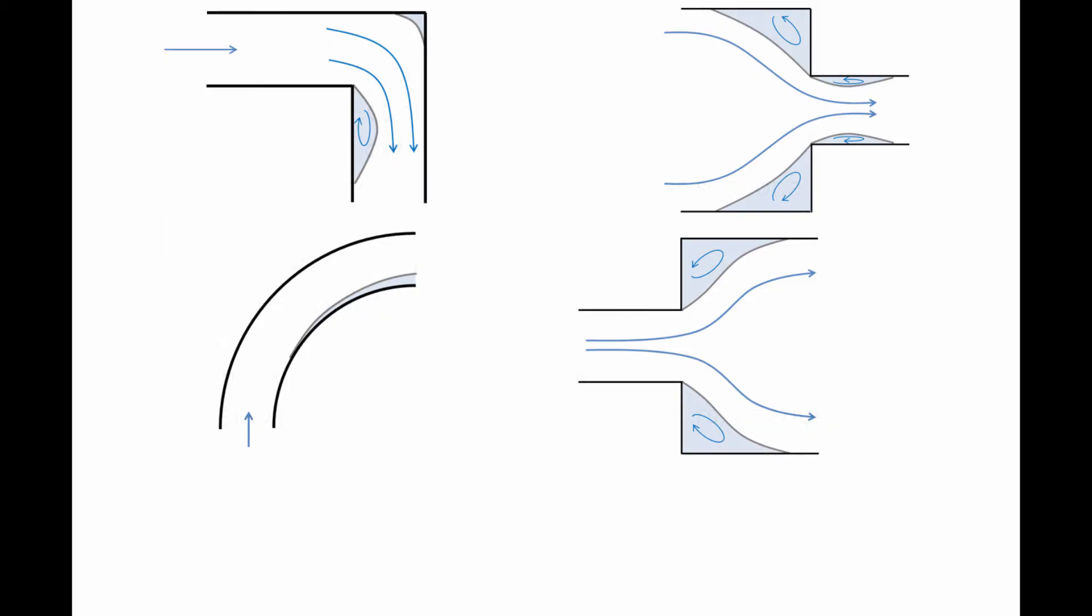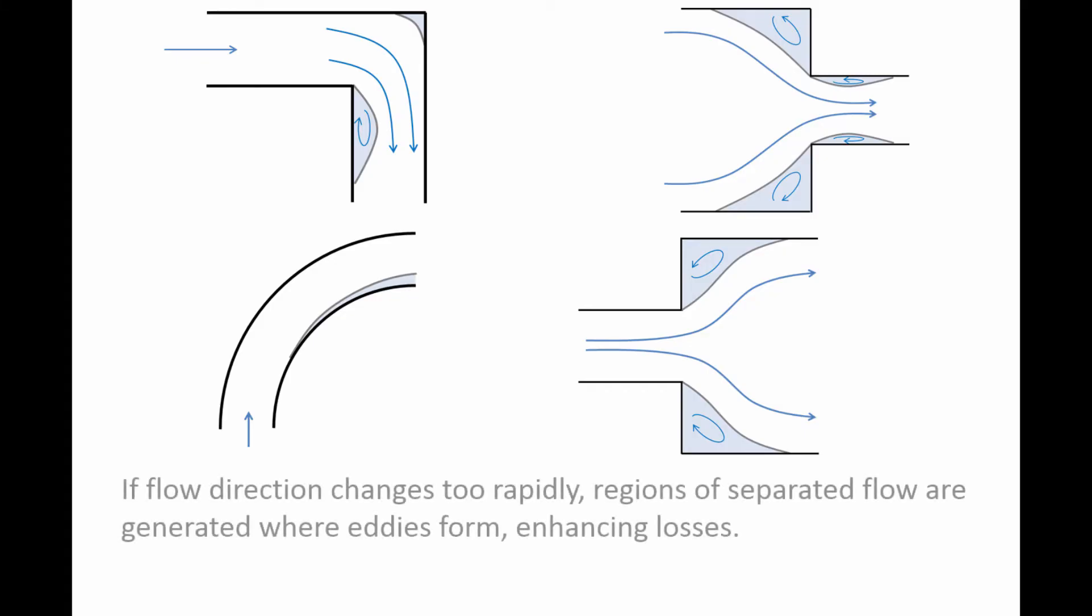Many components, such as the elbow, bend, sudden contraction, and sudden expansion shown here, cause the flow to change direction rapidly. This can lead to regions of separated flow, shown in blue, where eddies are formed. The presence of separated flow regions can greatly enhance losses in components.